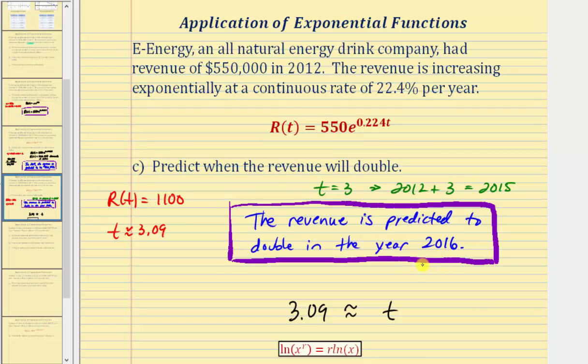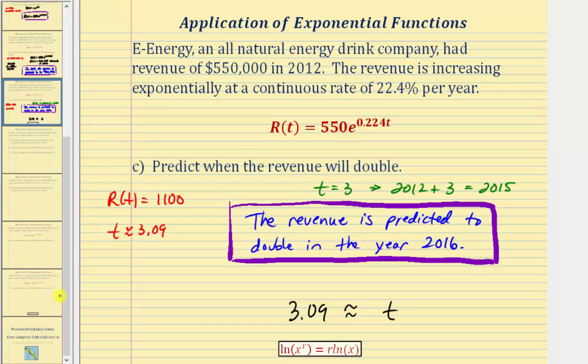I think we'll stop here for part one. In part two we'll take a look at an example where we have a continuous decay rate. I hope you found this helpful.